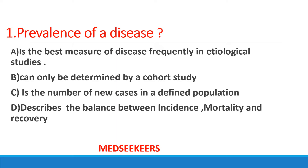In this video you can expect many epidemiology questions. First question: prevalence of a disease is — option A: the best measure of disease frequency in etiological studies; option B: can only be determined by a cohort study; option C: is the number of new cases in a defined population; option D: describes the balance between incidence, mortality, and recovery. Which among the following do you think it is?